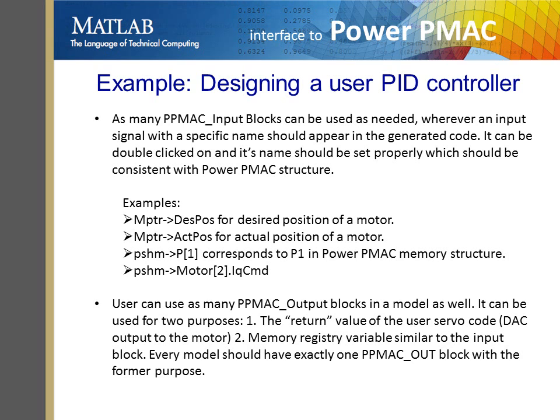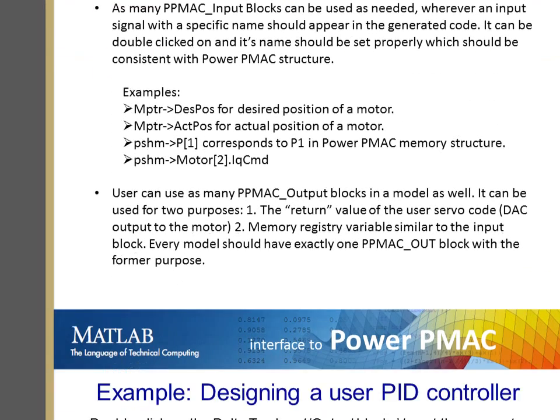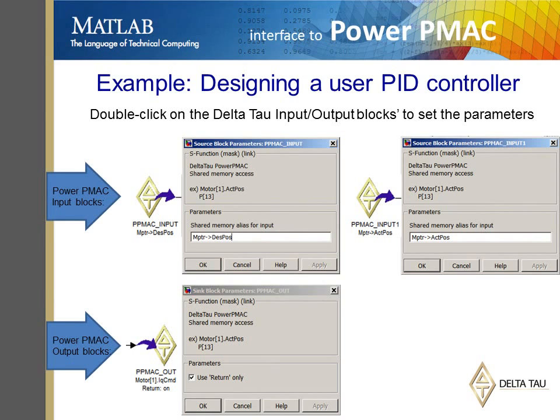Here are some instructions on where and how the PowerPMAC input and output blocks can be used. When you double-click on a PowerPMAC I/O block, a window opens. The user can set the memory location that the block has access to in that window.